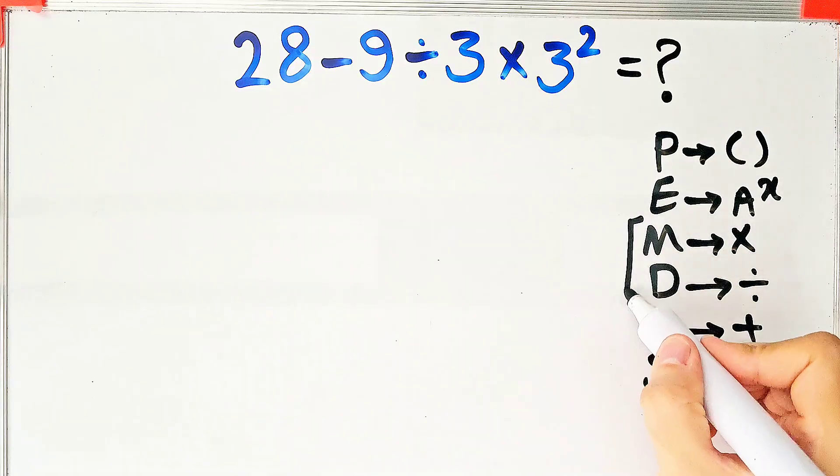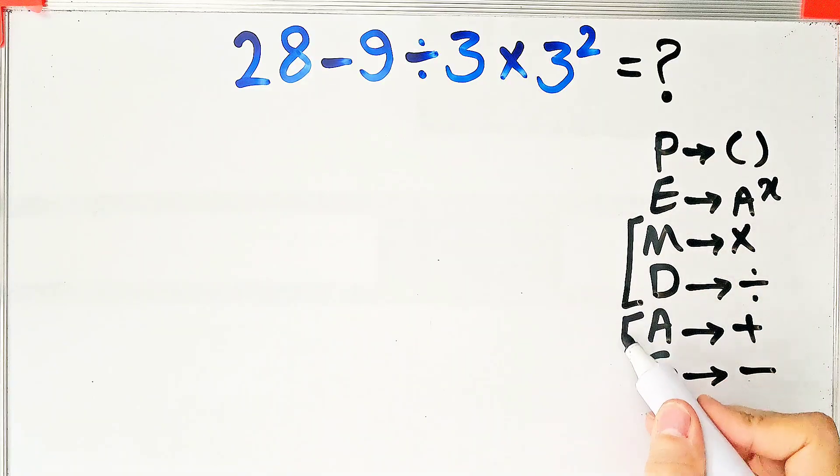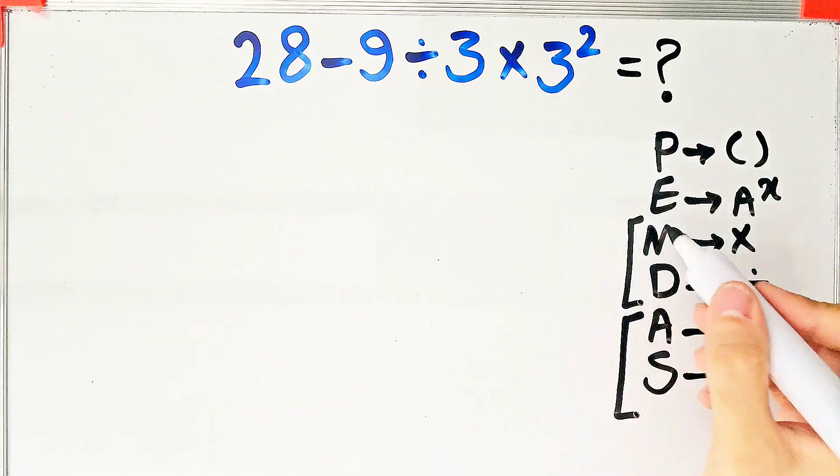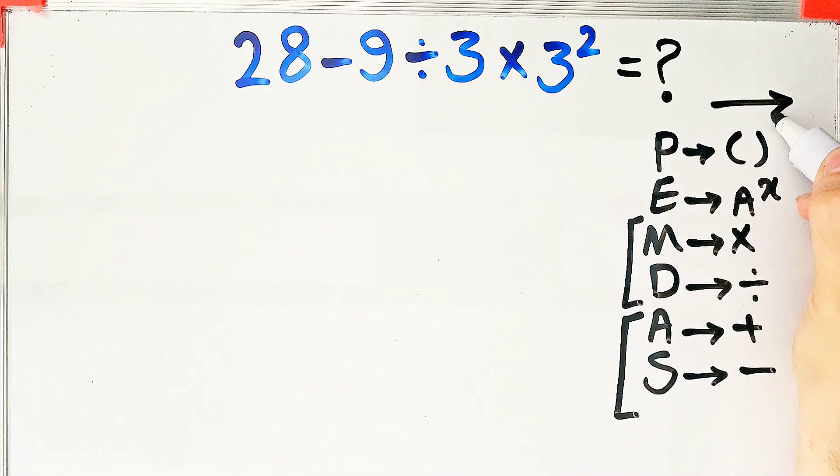Multiplication and division have the same level of priority, also addition and subtraction have the same priority. When we have both in an expression, we start from the left and simplify.